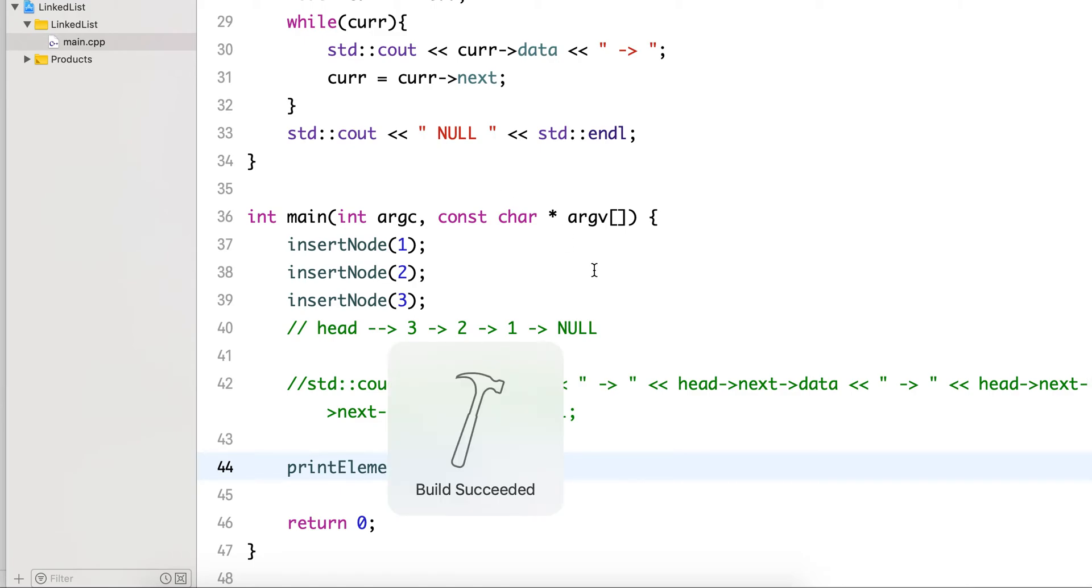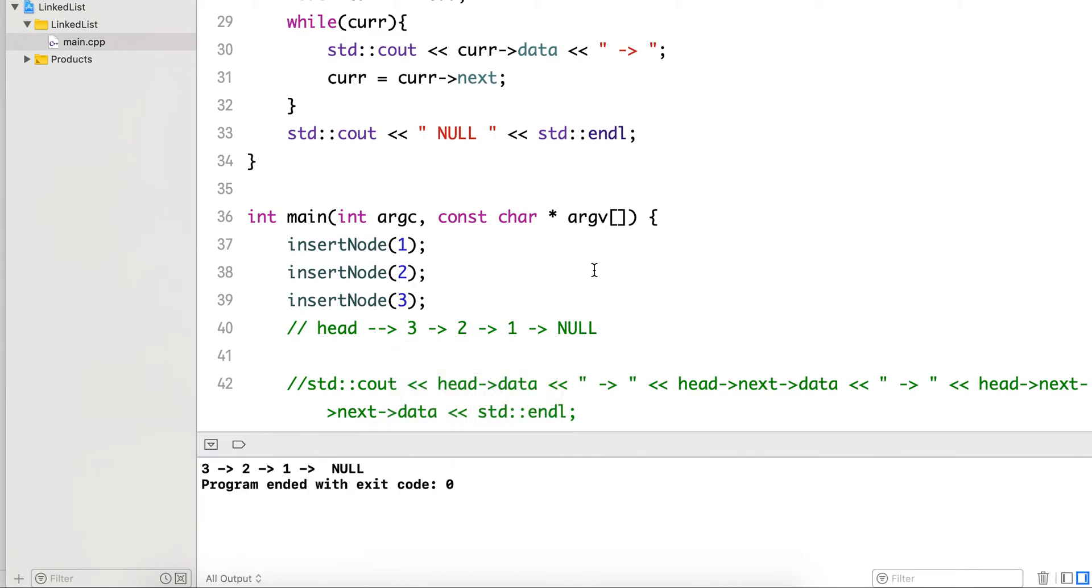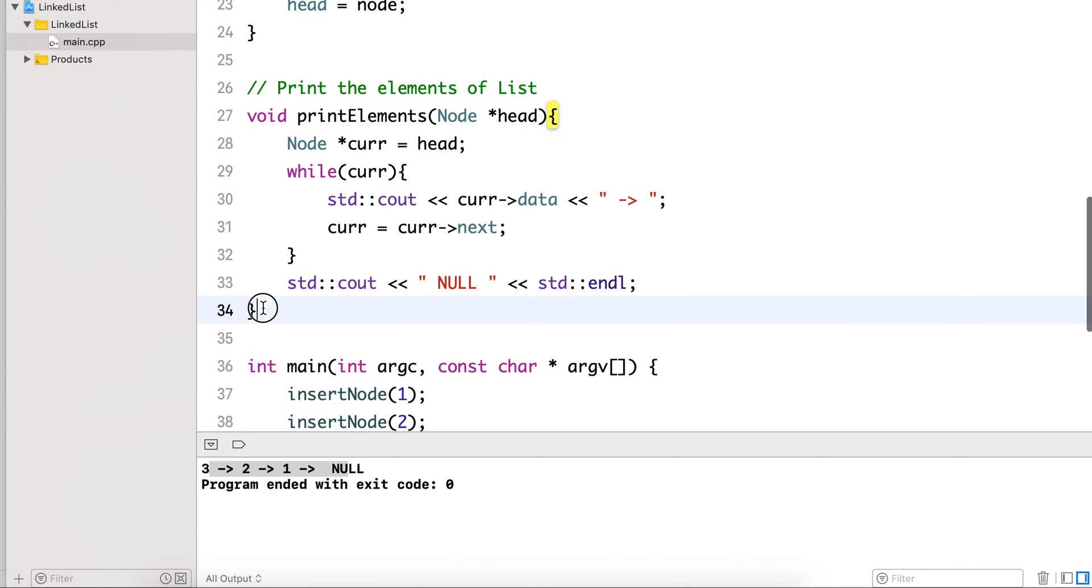So it prints the same thing, three, two, one, that we were printing manually. In this lecture we saw how to print the elements of the list.